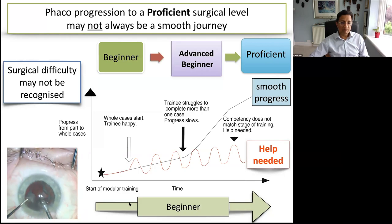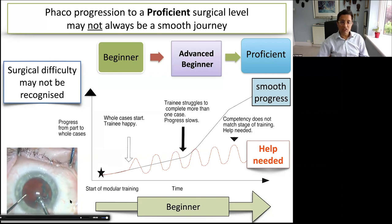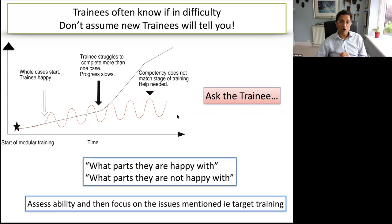Trainees will know themselves if they're on a smooth curve or having difficulty. It's always useful when you get a new trainee to ask what parts of the operation they're happy with and what parts they're not, then focus on those areas. Sometimes trainees may not tell you because they fear that admitting weakness means they won't get surgical opportunities — but we need to try and change that.